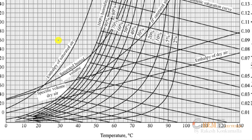First, I plot the wet bulb temperature. This is 30 and this is 40; there are five graduations — 30, 32.5, 35, 37.5, and 40. The given wet bulb temperature is 32.4°C, so I take 32.4 on the x-axis and move towards the 100% humidity curve — this will be my point on the 100% humidity curve.